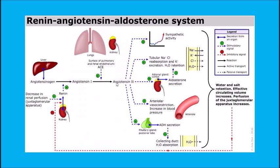When blood pressure and sodium are low, these cells release the hormone renin. When renin is released into the blood, it activates an inactive peptide secreted by the liver known as angiotensinogen. Renin cleaves angiotensinogen to form angiotensin 1, which doesn't do much on its own. The enzyme angiotensin converting enzyme (ACE), located in the capillaries of the lungs, some kidney cells, and endothelial cells, then converts angiotensin 1 to angiotensin 2.